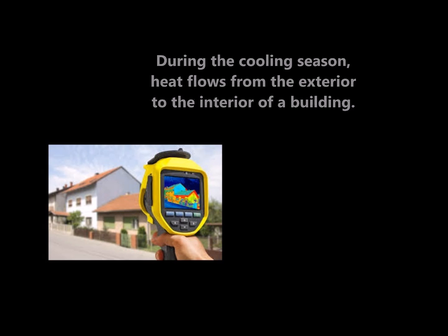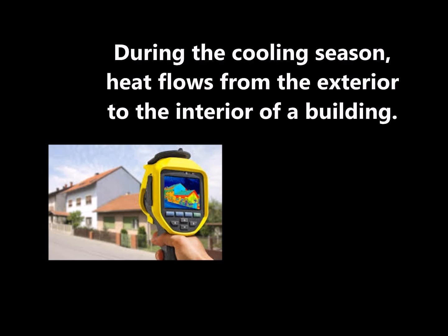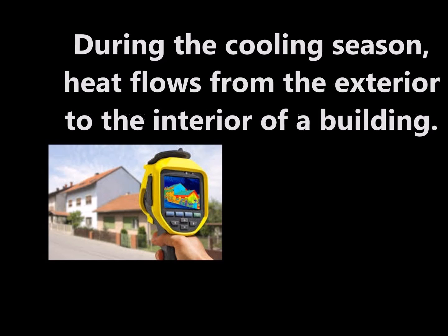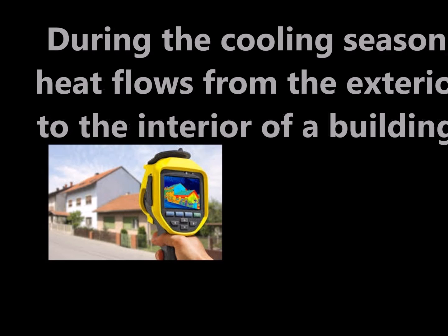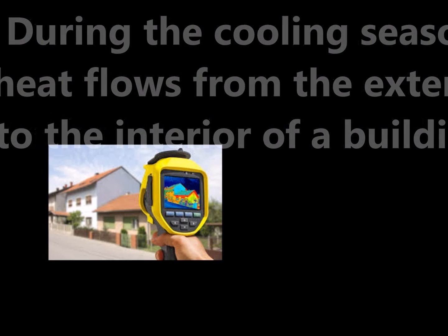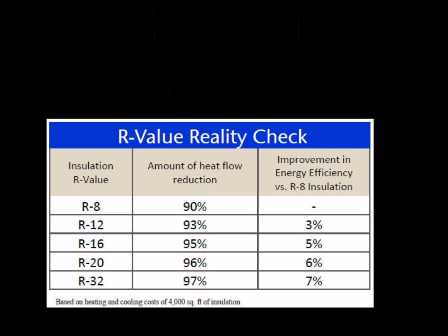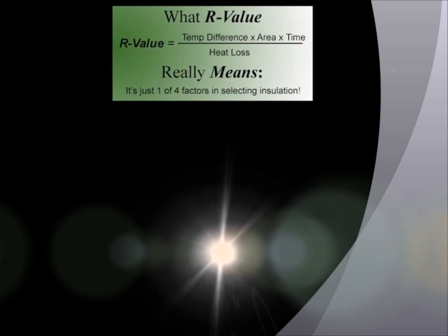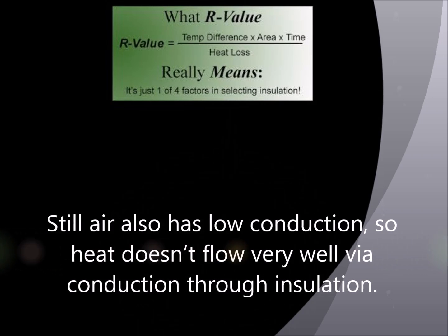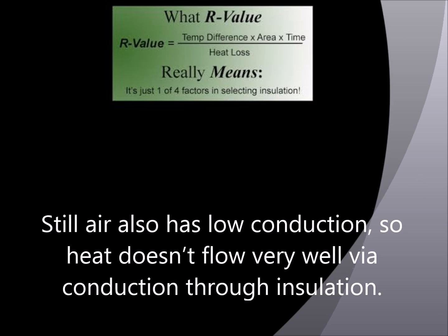During the cooling season, heat flows from the exterior to the interior of a building. To keep everyone inside comfortable, the heat loss in the winter must be replaced by the heating system, and the heat gained in the summer must be removed by the cooling system. A properly insulated home will decrease this heat flow by providing an effective resistance to the flow of heat. All forms of insulation do their job by limiting air movement. The still air inside the insulation is an effective insulator because it eliminates convection. Still air also has low conduction, so heat generally doesn't flow very well via conduction through insulation.